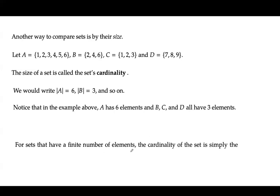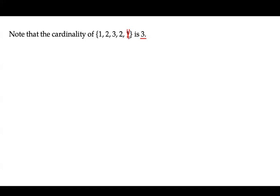For sets that have a finite number of elements, the cardinality of the set is simply the number of members or elements in that set. Please note that the cardinality of the set {1, 2, 3, 2, 1} is not 5 — it is 3, because you have repetition here. 1 is repeated twice so we ignore the second one. 2 is repeated twice so we ignore the second 2. It basically has 3 distinct or unique elements.